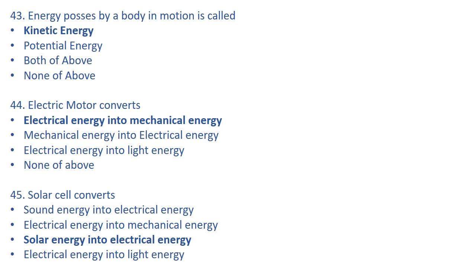Energy possessed by a body in motion is called kinetic energy. Potential energy of a body at any height is represented by ρgh, and kinetic energy is represented by half mv², where m is the mass and v is the velocity.